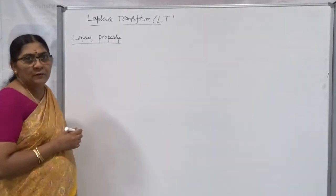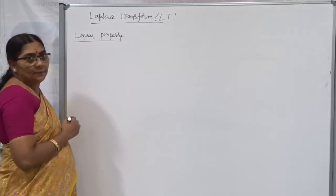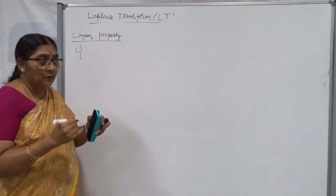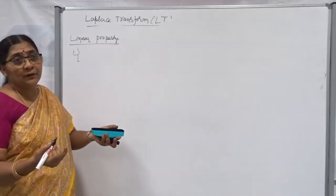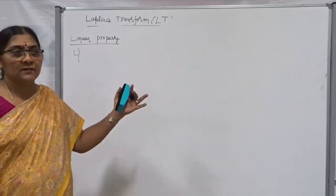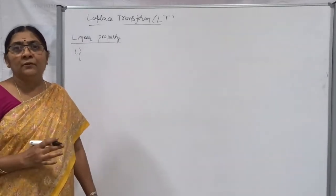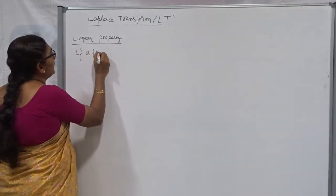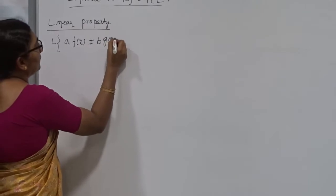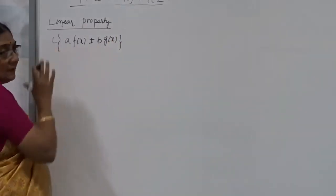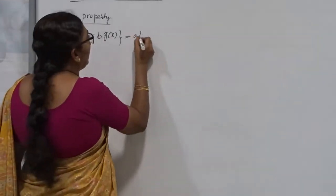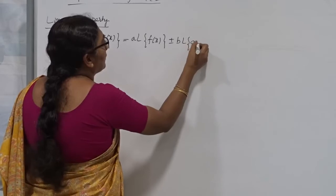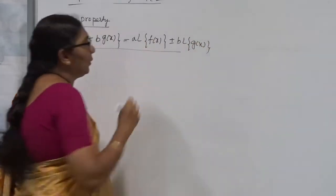The first property, and also very much useful in everyday solving, is the linear property. Linear property is very much useful whenever you have a function with more than one term — maybe two terms or three terms. If you want to find out the Laplace Transform of an entire function, it is better to take the Laplace Transform of each term separately. For example, Laplace Transform of A·f(x) ± B·g(x), where A and B are constants, can also be written as A·L{f(x)} ± B·L{g(x)}. This is called the linear property.